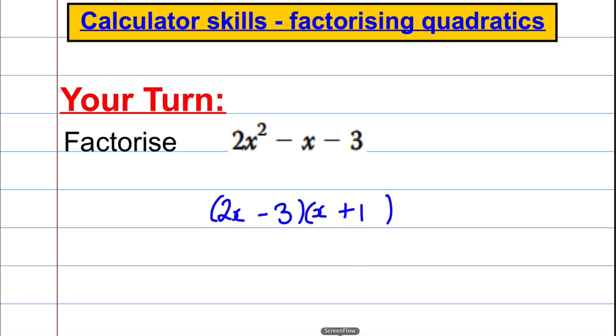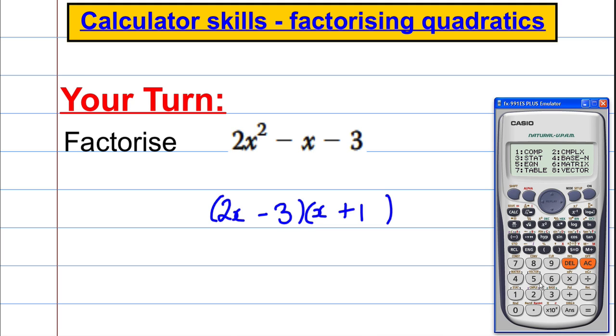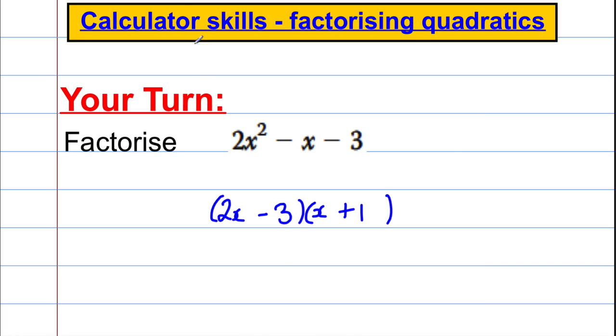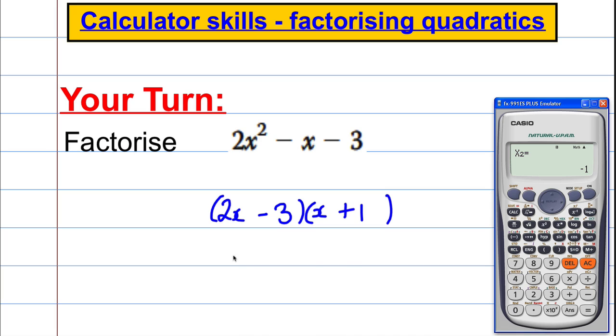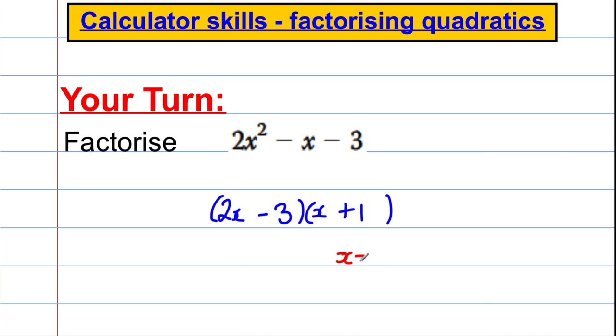Hopefully you got that. But hopefully you were able to check that on your calculator. And what you would have done is mode 5, quadratics, and it's 2x squared, subtract 1x, and subtract 3. You go like that, you get x is equal to 3 over 2, and x is equal to negative 1.